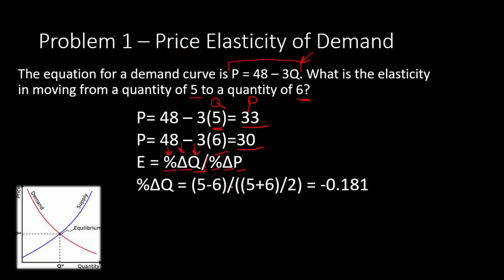Typically when you find the percentage change in something, you take the difference between the two items and divide by the original number. But in this course, to calculate elasticities, we're going to use what's called the midpoint formula. Instead of dividing by 5, we take 5 plus 6 divided by 2, which gives us 5.5 — the average.